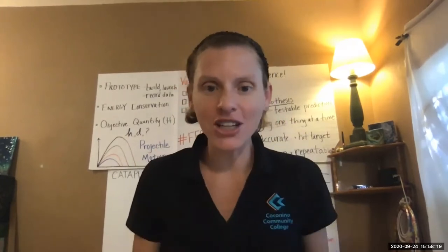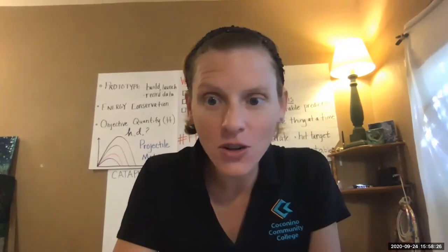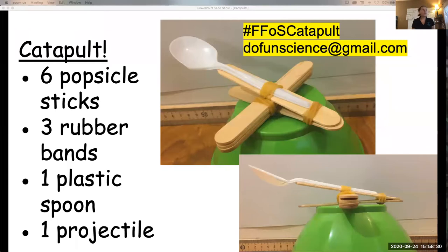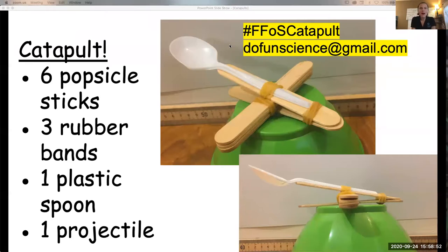So just a short introduction. Today, once you have created your prototype and modified it, I'm going to ask you to share it with others so we can see what you've made. You'll do that by putting hashtag FFOS — Flagstaff Festival of Science — FFOS catapult, one word. Or you can email me a picture of what you have and maybe some of your data. I would love to share it out with everybody on our Flagstaff Festival of Science website.